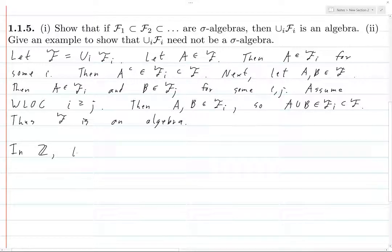So, in the integers, let Fi be the sigma algebra generated by the power set of the integers minus i to i. So, Fi consists of all subsets of negative i all the way up to i. All subsets of this set, all subsets of this subset of the integers. But it also contains their complements. And anything you can do by taking, unions and intersections of these complements.